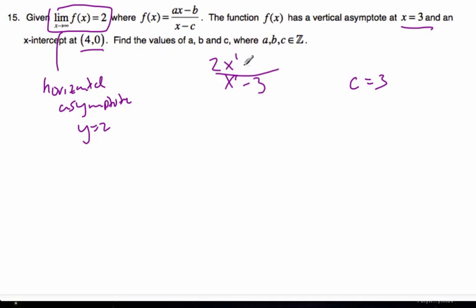And now that leaves us with finding b. To find the last value, I'm going to plug in this coordinate. I know that 0 is equal to 2 times 4 minus b over 4 minus 3. I multiply both sides by that, it goes away. I get 0 equals 8 minus b, so b is equal to 8.